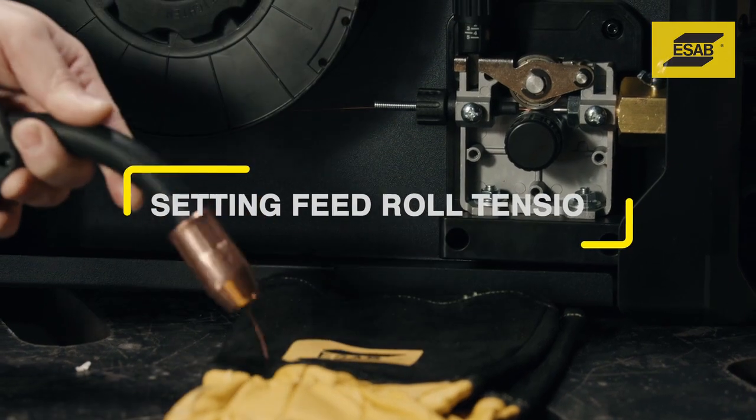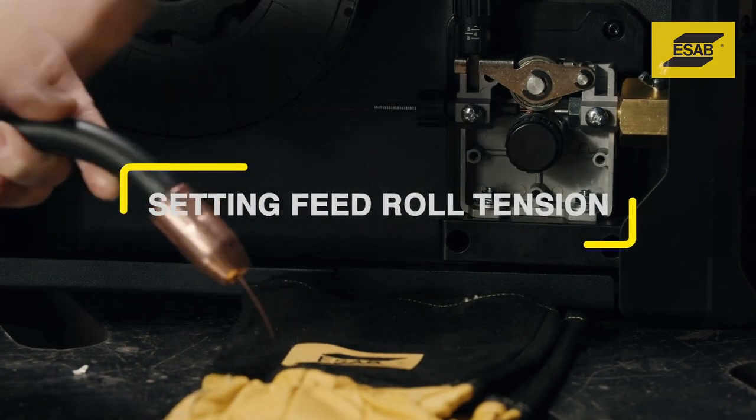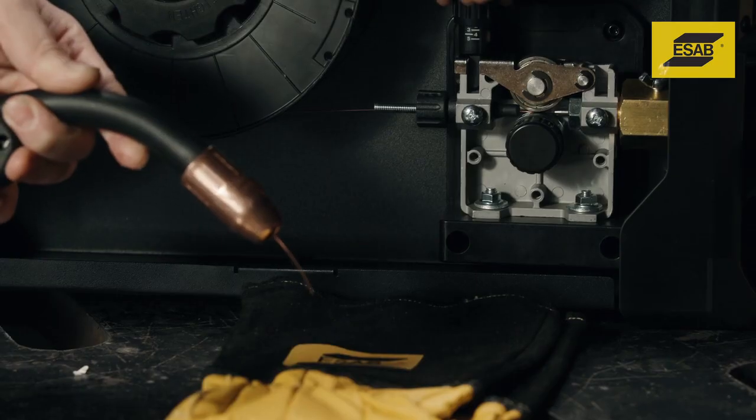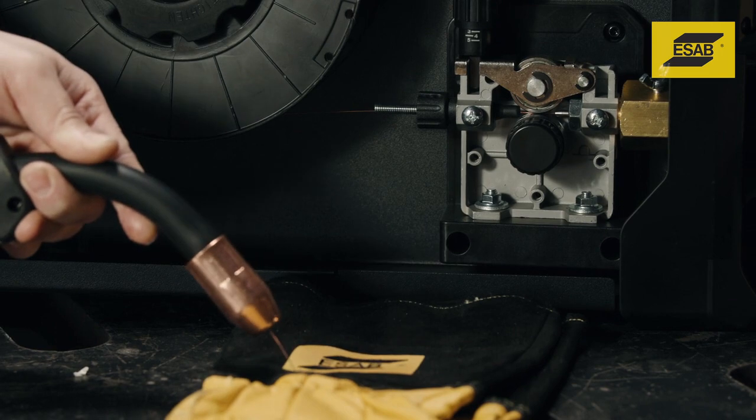Setting feed roll tension. Proper tension on the feeder rollers is essential for consistent welding performance. You want to add just enough tension to prevent the wire from slipping.